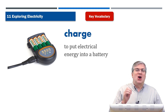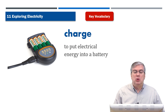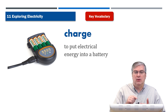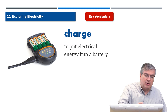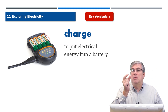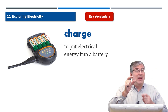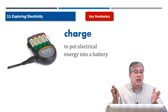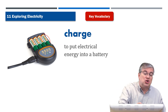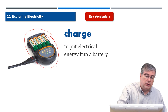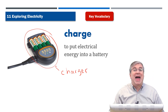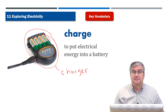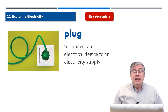The first word is 'charge.' In this meaning, charge means to put electrical energy in a battery. Look at these batteries here — each battery has some electrical power in it. When you use it all up, the power is gone, so you put it in a charger. This is called a charger — to charge the batteries, to put power back into the battery.